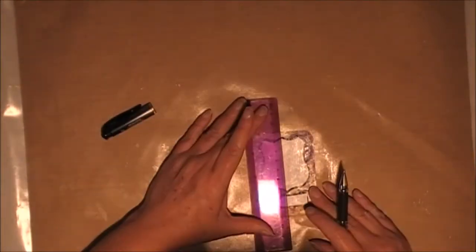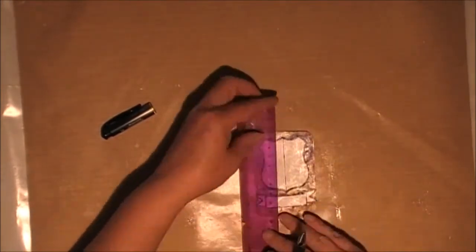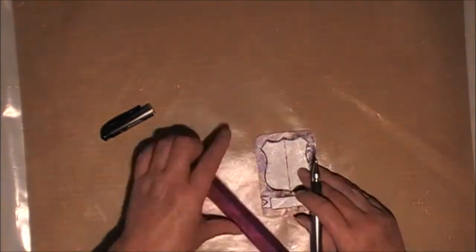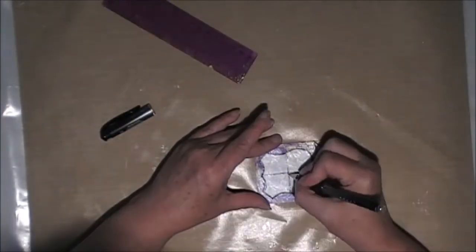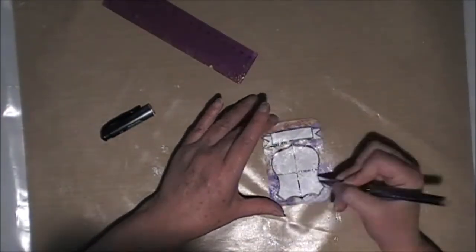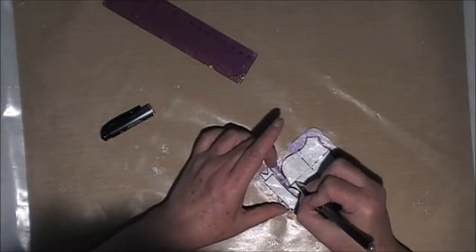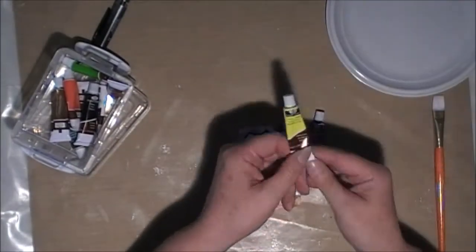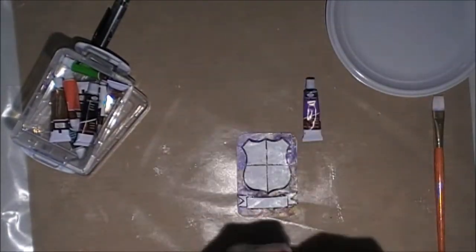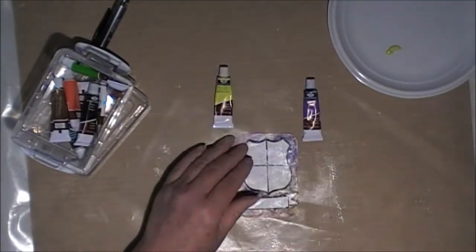I've just cut it out, put it on with gel medium, and now I'm using my Uniball black gel pen just to show the divisions. Now what I've done is I've just gone through my stash and I'm trying to use some of the things that I don't use very often.